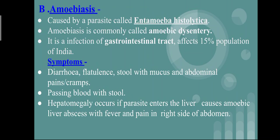The second disease is Amoebiasis, also called amoebic dysentery. It is caused by a parasite known as Entamoeba histolytica. It is a common infection of the human gastrointestinal tract and affects about 15% of the population of India. Symptoms include diarrhea, flatulence, stool with mucus, abdominal cramps and pains. In severe cases, passing of blood with stool is a common symptom. It also shows hepatomegaly — that means enlarged liver — if the parasite enters the liver, causing amoebic liver abscess.